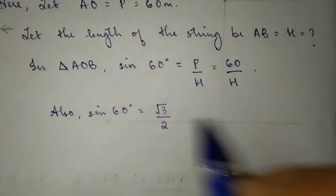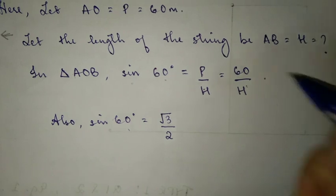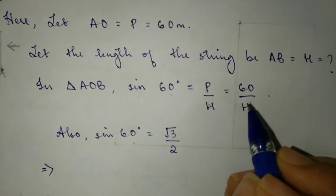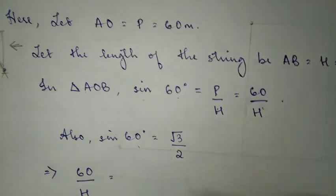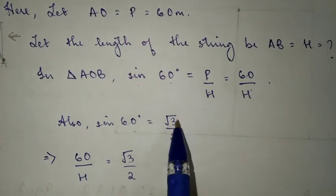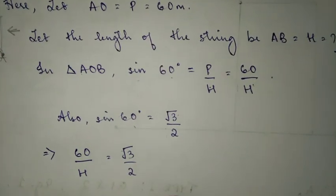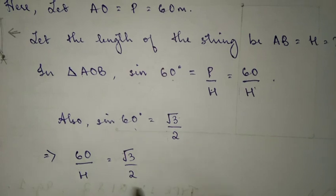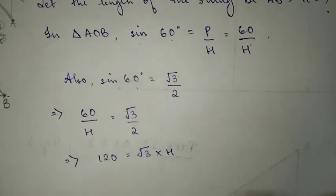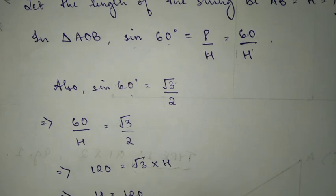Sine 60 degrees equals root 3 by 2. So since they are both sine 60, their right-hand sides will also be equal: 60 by H equals root 3 by 2. Cross-multiplying: 60 into 2 equals root 3 into H, so 120 equals root 3 times H. Therefore H equals 120 by root 3.